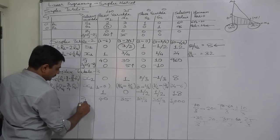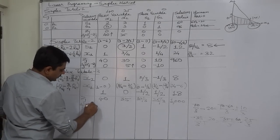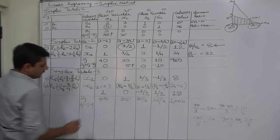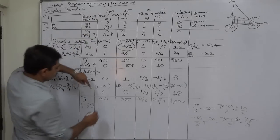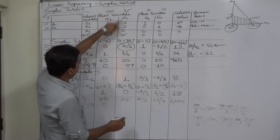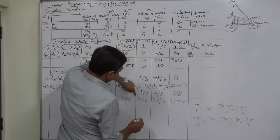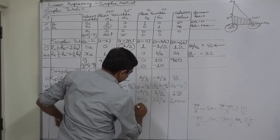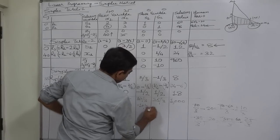Delta J equals Cj minus Zj. For x1: 40 − 40 = 0. For x2: 35 − 35 = 0. For the next variable: 0 − 10/3 = −10/3.